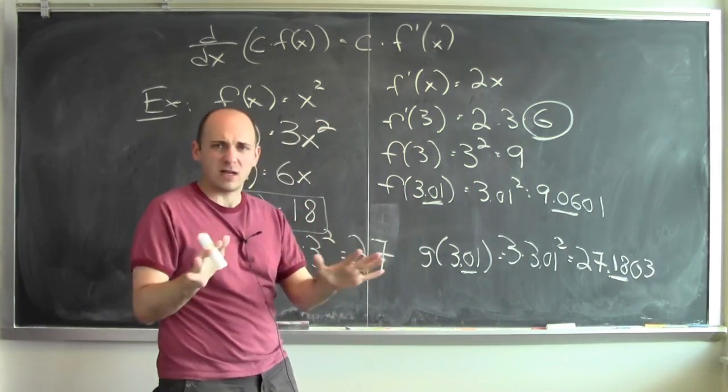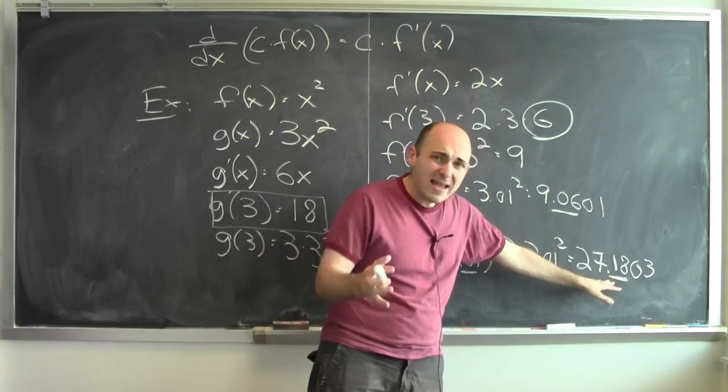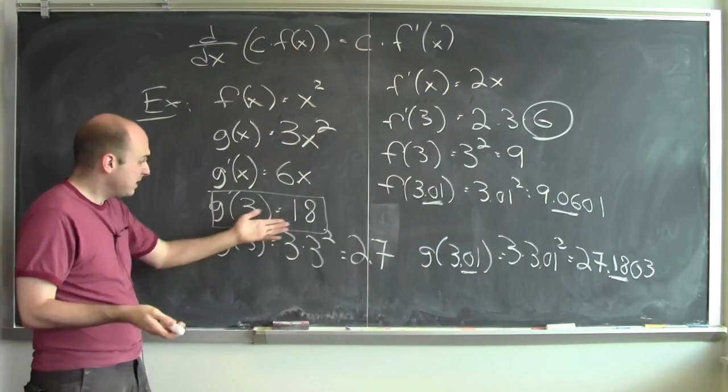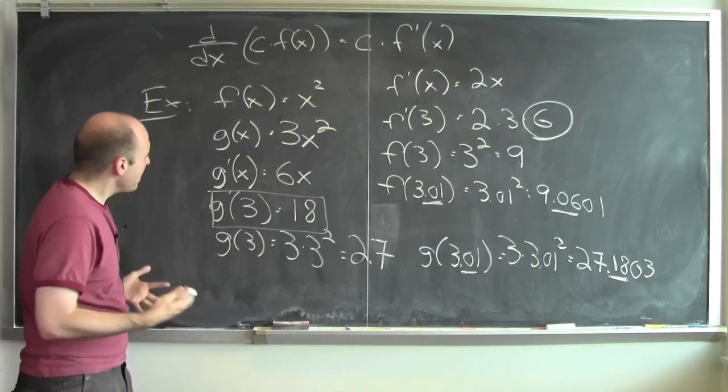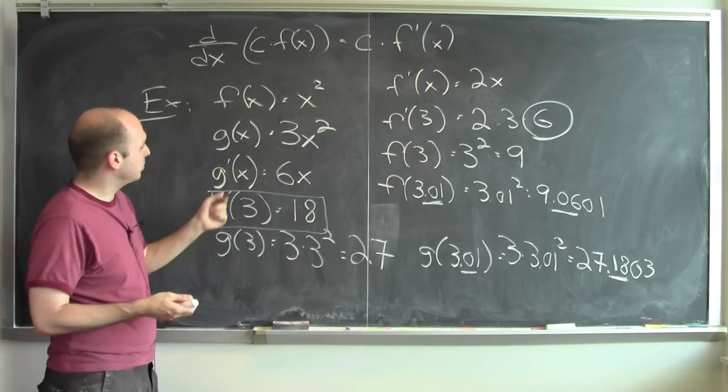I mean, you know, approximately. So I increase the input by a little bit and the output is increased by 18 times as much. And not coincidentally, the derivative of this function is 18. And I hope that kind of makes sense, then, why there's rules like this constant multiple rule.